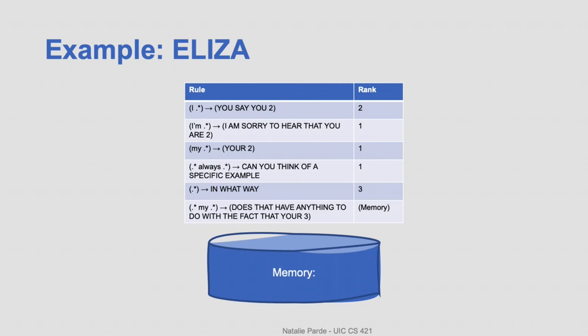Now that we've covered the basics of ELIZA, let's see what this process looks like in practice with a sample dialogue. In practice, implementations might have many more rules and rankings, but they work the same way overall. We start with a list of rules, an empty memory stack, and input from the user. We feed the input to the system, and since most patterns look for 'I' or 'my,' we match the most general pattern and output 'in what way.'